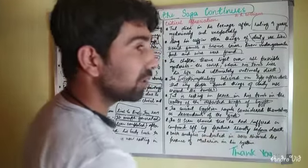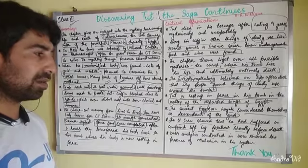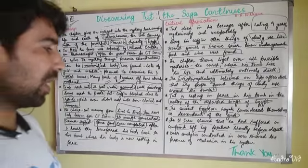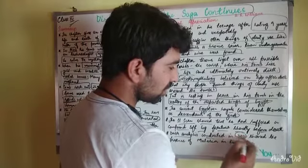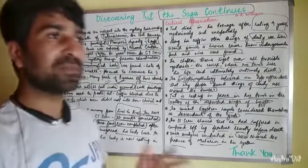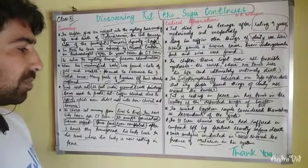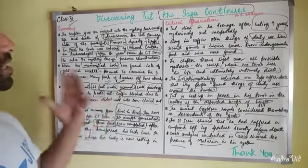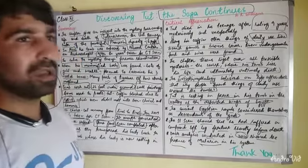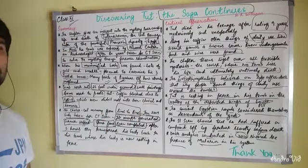The CT scan showed that Tut had suffered a compound left leg fracture shortly before his death. One possible explanation is that he fell from somewhere, causing multiple fractures in his left leg, leading to an infection that killed him. Another DNA analysis conducted in 2010 showed the presence of malaria in his system, which may have caused his death. There are many theories about this young ruler's death, and research is still ongoing at universities like Cairo and Harvard.